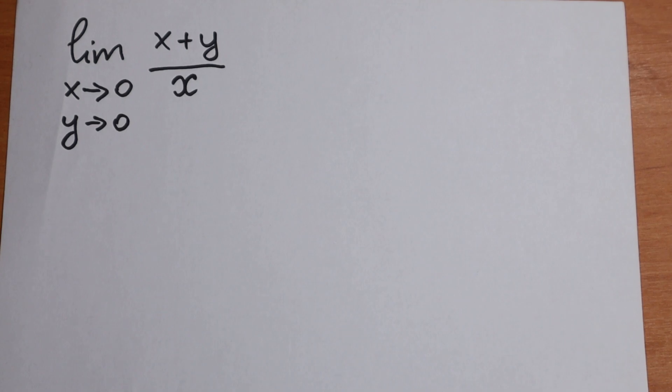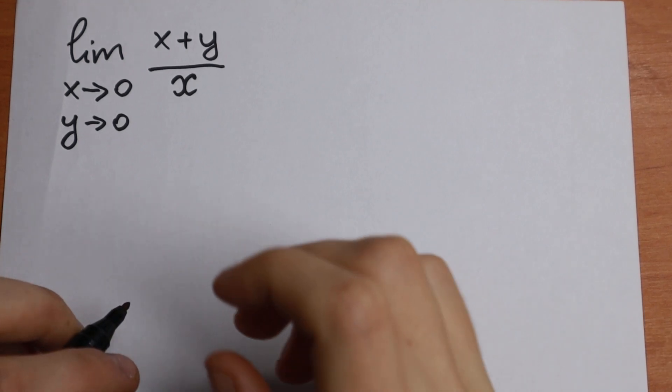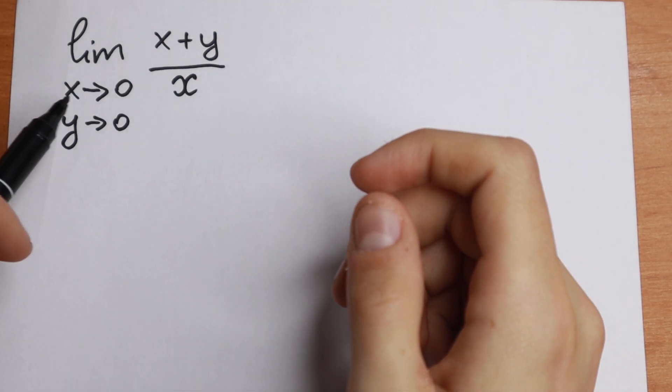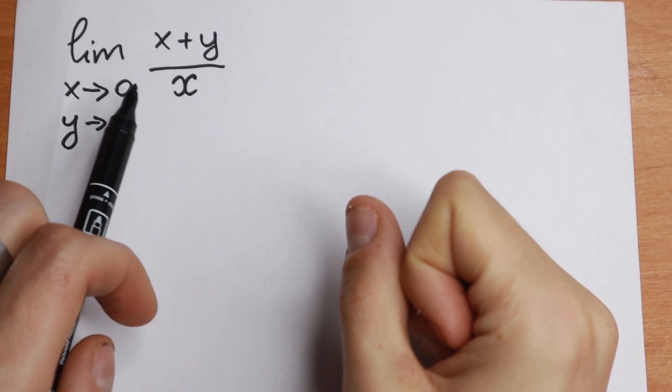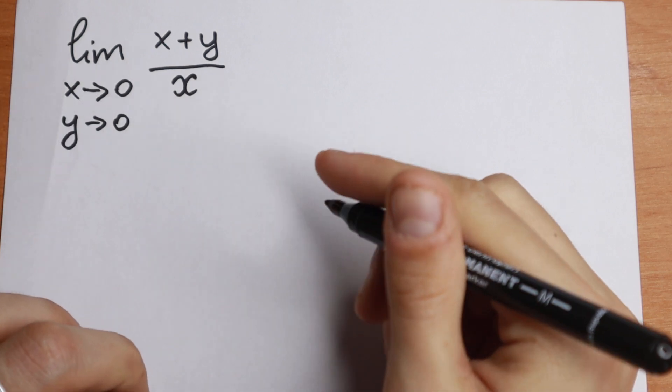Hello everyone and welcome back to Higher Mathematics. Today we have an interesting limit. We have a limit x approaches 0 and y approaches 0, when x plus y all over x. And we need to find this limit.